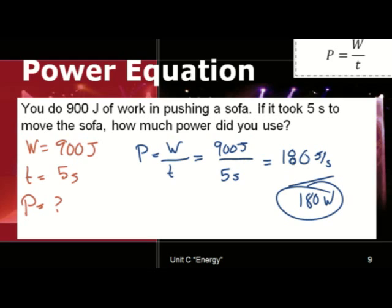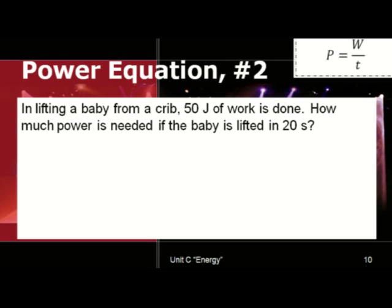Let's look at a second example problem. In lifting a baby from a crib, 50 joules of work is done. How much work is needed if the baby is lifted in 20 seconds? Let's record our variables that we know. Work is equal to 50 joules. The time in which the baby is lifted is 20 seconds. And what we want to find out is power.